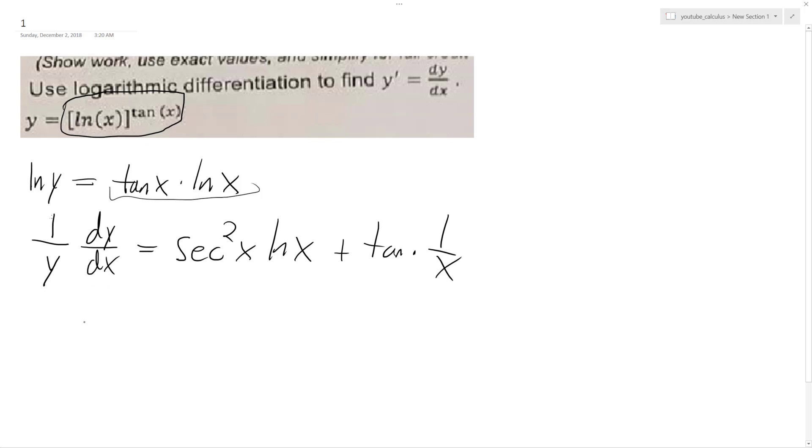So I'm going to multiply both sides by y. And finally, I get dy dx, which is going to be equal to y times the whole quantity secant squared x, natural log x, plus tangent of x over x.